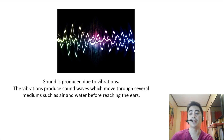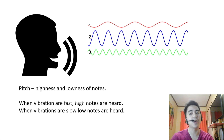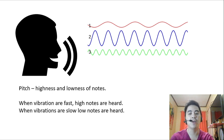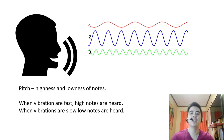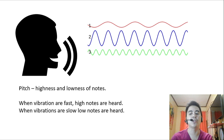Sound has different properties. First, we have what we call pitch — it is the highness and lowness of notes. When the vibrations are fast, high notes are heard. When vibrations are slow, low notes are heard. For a string instrument, the length, thickness, and tension will affect the pitch.